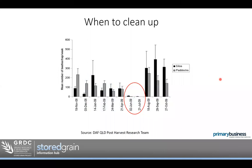What time of year should we clean up? Research tells us that insects breed and travel when temperatures warm up. In June and July when temperatures are cold, insect reproduction slows right down and insects don't tend to move around much. That's the best time to do grain storage hygiene. Even now in August, before temperatures warm up into spring, is a good time to clean up and get rid of insects before they start breeding and moving around the farms.